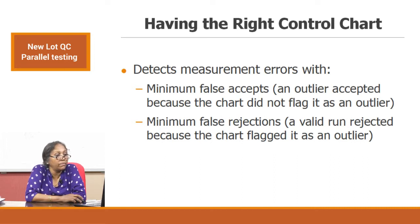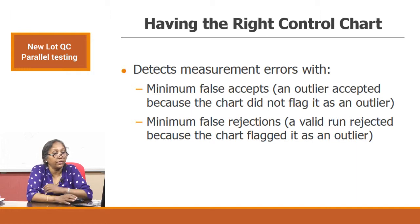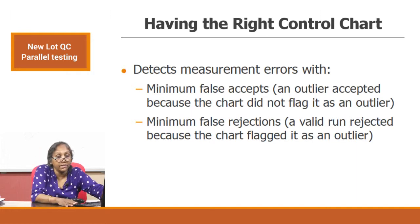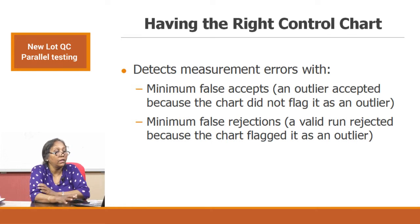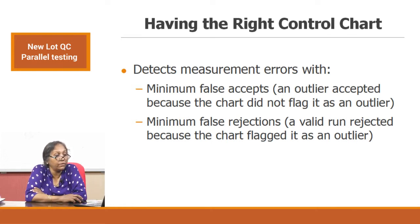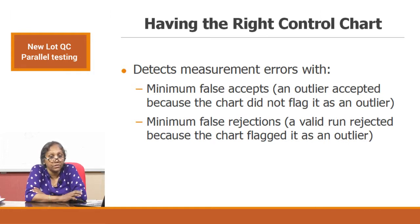Having the right control chart is important — we already discussed this as a recap from the last video. There should be minimum false accepts: an outlier accepted because the chart did not flag it is a false accept. And minimum false rejections: a valid run rejected because the chart flagged it as an outlier. We have to avoid both these situations, and therefore we have to develop the right chart.